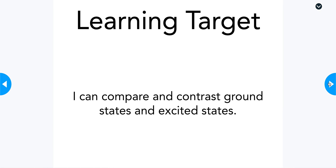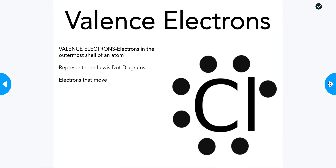Our learning target for today is: I can compare and contrast ground states and excited states. First thing we need to talk about is valence electrons. When we made our Lewis dot diagram periodic table, we took our Bohr model and only drew the outermost layer of electrons. That outermost layer is the valence electrons — the electrons in the outermost shell of an atom. They are the most important and most active electrons, available to interact with other atoms, and we represent them using Lewis dot diagrams.